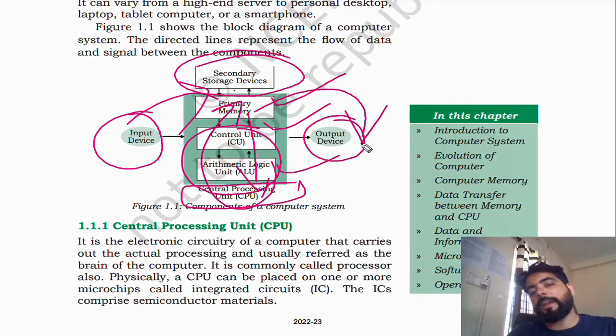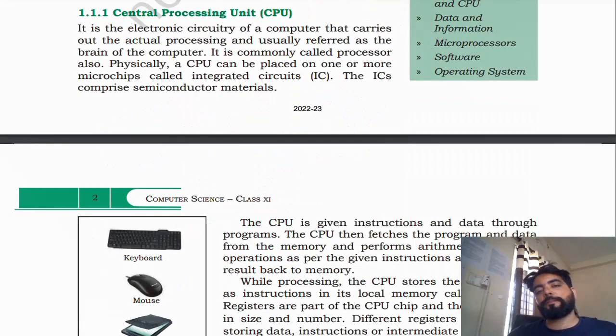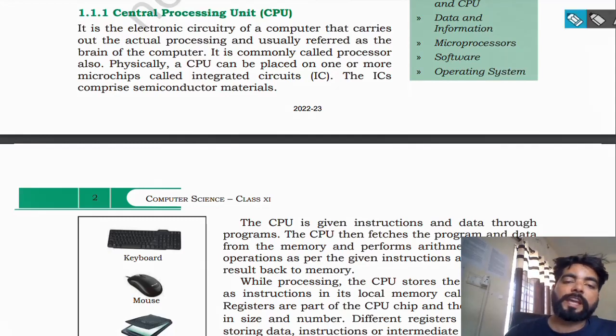The output device fetches the output from primary memory and takes it away. Now, what is the central processing unit — CPU?